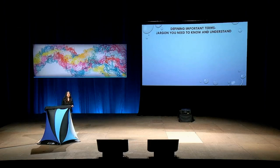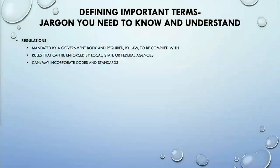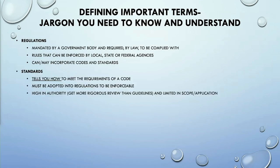In order to do that, we need to understand some different terms, so let's review the jargon. Regulations are things that are required by law — things that are enforceable and mandated. This could be at a local level, state level, or the federal level. Standards usually tell you how to meet your various requirements. They are not enforceable unless they are adopted into regulation, and they're usually higher in authority because they often require more rigorous review.